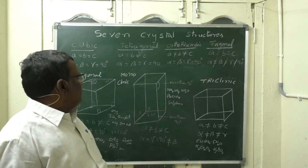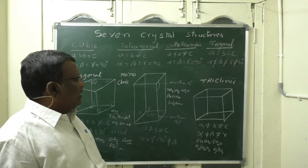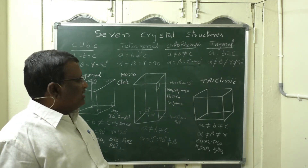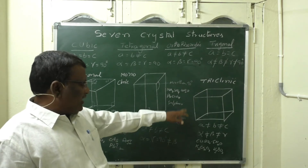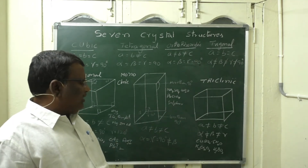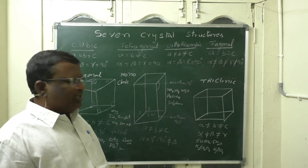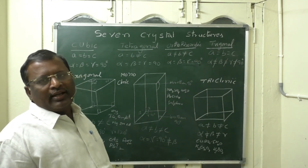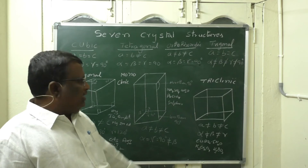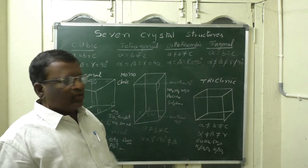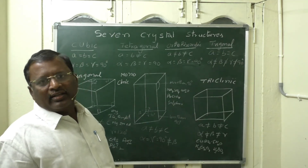The last structure is triclinic. Here a ≠ b ≠ c, and alpha ≠ beta ≠ gamma — the sides are not equal and the angles are also not equal. No angle equals 90 degrees. Examples of triclinic structures include copper sulphate pentahydrate, potassium dichromate, and boric acid.